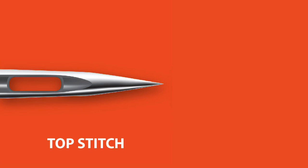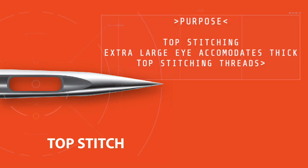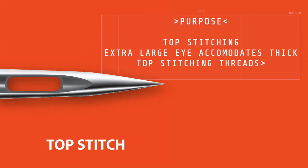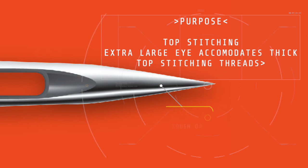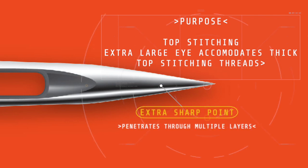The top stitching needle is my favorite and the one I use most of the time. It has an extra large eye which accommodates thick top stitching thread, and an extra sharp point which allows the needle to penetrate through all the fabrics — as you would when top stitching or even quilting.